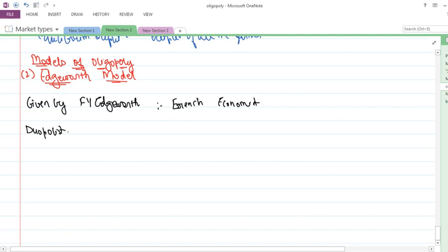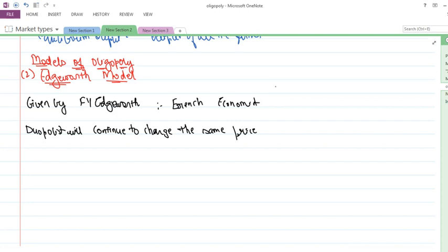What Edgeworth assumed is that a duopolist will continue to charge the same price. With this assumption, he has taken the example of mineral springs. Edgeworth showed that no determinate equilibrium would be achieved in a duopoly.